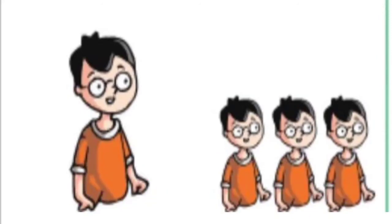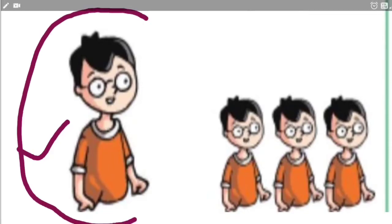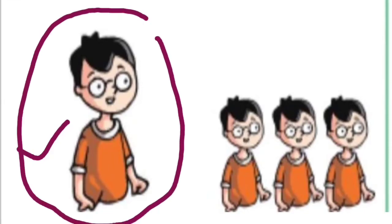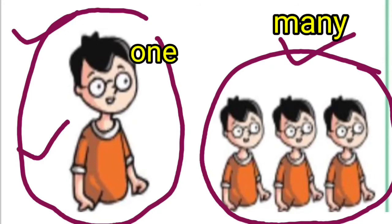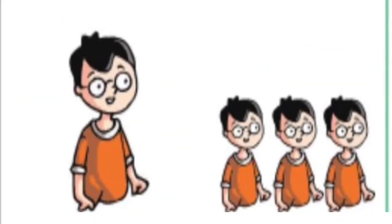See this next picture. Who is he? He is a boy. How many boys are here in this picture? There is only one boy. And in this picture there are many boys. One boy — many boys. One boy — many boys. Understood? Very good, very nice.